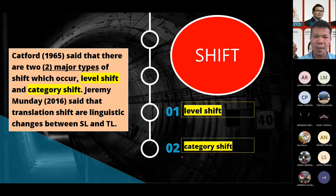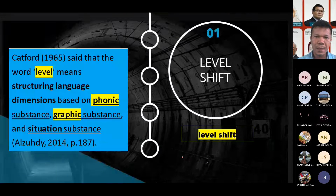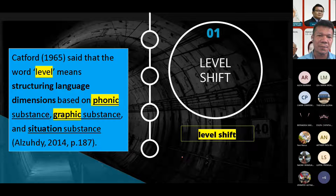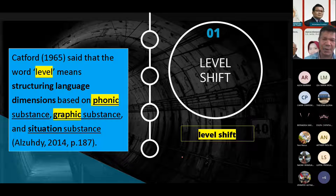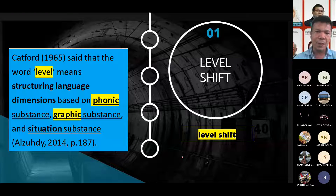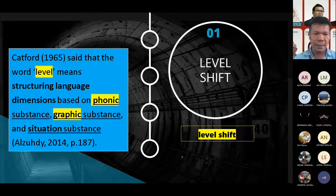There are two kinds of shift: level shift and category shift. Level shift means the word level — structuring language dimension based on phonic substance and graphic substance. Phonic is used for the oral/spoken medium, and graphic means the written medium. In writing we use the physical representation of the sound.